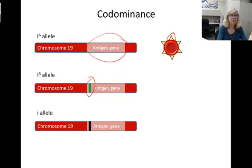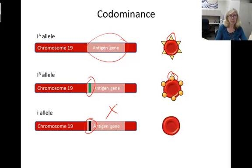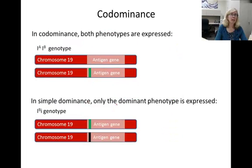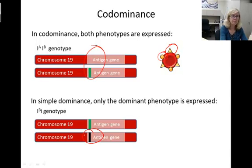The B allele has a mutation so that it codes for a different protein that adds a slightly different type of carbohydrate to the membrane of the red blood cell. The I allele has a mutation that prevents any working protein from being made, so its red blood cells do not contain any carbohydrate in their membrane. In codominance, both phenotypes are expressed in the heterozygote. If both A and B alleles are present, then both proteins are made, so both carbohydrates are found on the red blood cell. The ABO blood system is also an example of simple dominance because the I allele is recessive and hidden if there is a working allele present, like A or B.